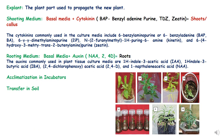Now let us discuss some terms. An explant is the plant part used for the propagation of a new plant. Explant can be any part of the plant because all parts and all cells are totipotent. So an explant can be a node, a shoot, a root, an apical meristem, a leaf — anything which gives rise to a new plant is called an explant.